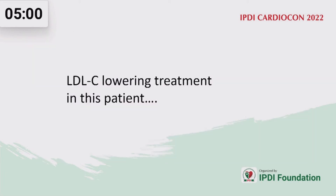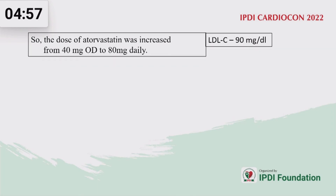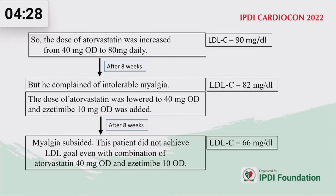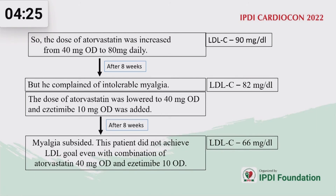So what we have done in this particular case: we doubled the atorvastatin dose from 40 mg OD to 80 mg daily. The starting LDL cholesterol was 90 mg/dL. After 8 weeks, LDL came down to 82 mg/dL. So the dose of atorvastatin was lowered back to 40 mg OD and ezetimibe was added. After another 8 weeks, the LDL came down to 66 mg/dL. Myalgia subsided, but the patient did not achieve the LDL goal even with the combination of atorvastatin and ezetimibe 10 mg OD.